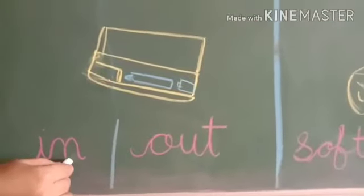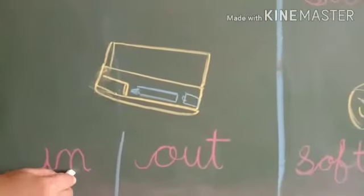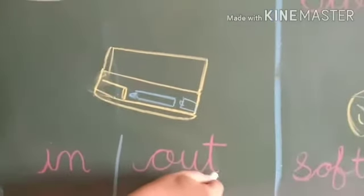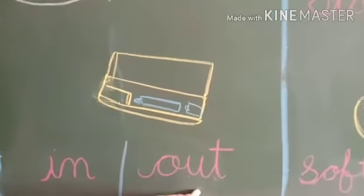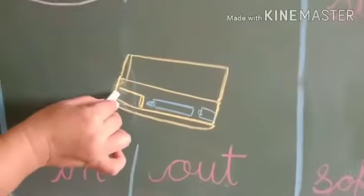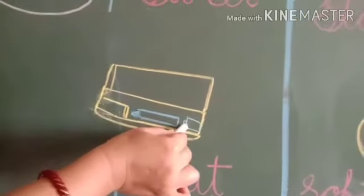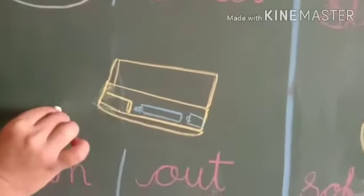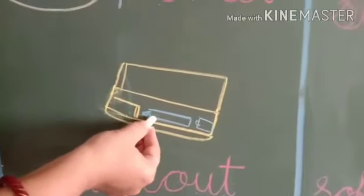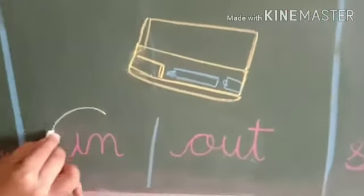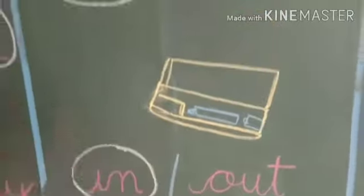I-N, in, in means andar. O-U-T, out, out means bahar. Look at the picture. Pencil, eraser, sharpener, compass ke inside hai ya outside? Andar ki side hai, means in. I-N, in.